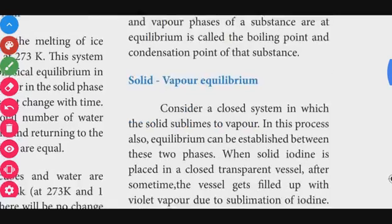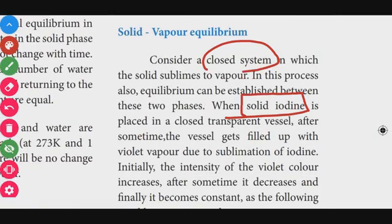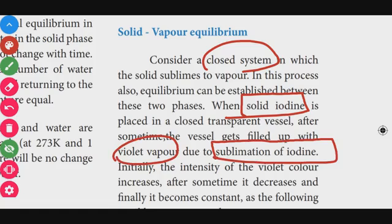Next, solid-vapor equilibrium. In this type, a solid is directly converted into vapor — this process is called sublimation. For example, iodine placed in a closed vessel produces violet vapor due to sublimation. Iodine and camphor are common examples of substances that sublime.